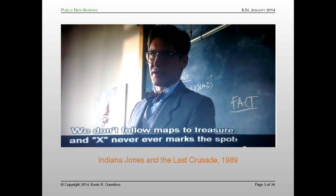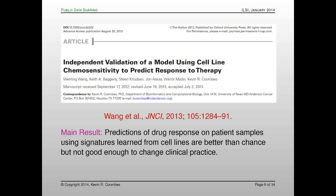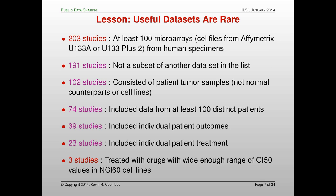You might think there's a lot of treasure there to go looking for. We don't have a map, but we do want to start looking. The first example I want to give is some idea of how much of this public data is really useful. This is a paper published by my post-doc Quentin Wang last year in the Journal of the National Cancer Institute. The main result is that if you're predicting drug response based on signatures learned from cell lines and applying them to predict which patients will respond to which drugs, you can do that better than chance, but not in a way that's good enough to change clinical practice. The really important result for this talk is how hard it was to find useful data sets in GEO.